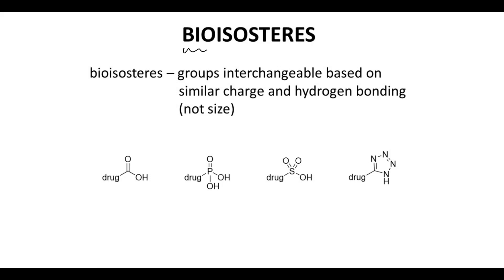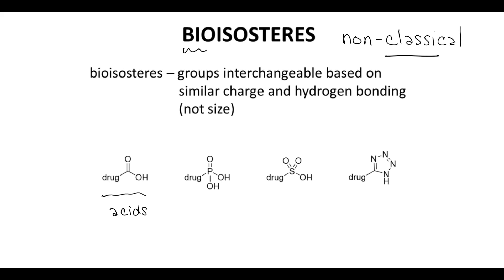Another type of isostere is the bioisostere, often called non-classical isosteres. Non-classical isosteres, or bioisosteres, emphasize swapping groups that preserve the same charges and hydrogen bonding activity. By far, the most common use of non-classical isosteres is with carboxylic acids. Carboxylic acids readily undergo phase two conjugations, specifically glucuronidations. Replacement of a carboxylic acid with another group that preserves the negative charge while suppressing phase two conjugation, reducing clearance, and extending half-life is a valuable tool.